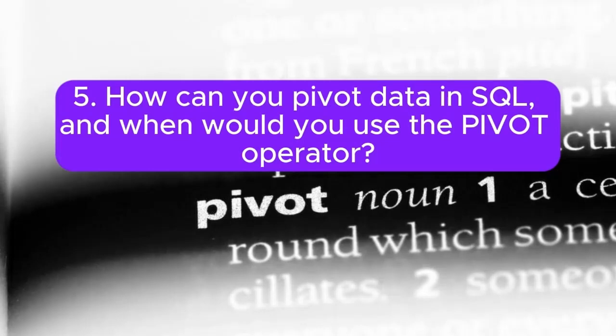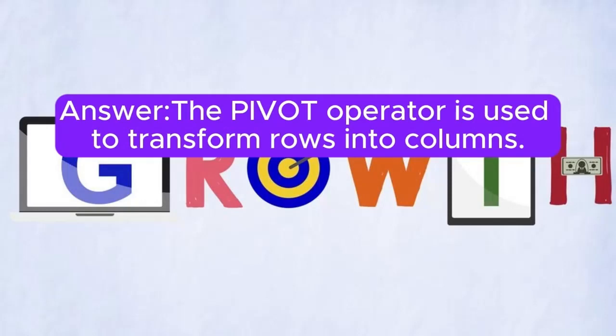Question 5: How can you pivot data in SQL, and when would you use the pivot operator? Answer: The pivot operator is used to transform rows into columns.